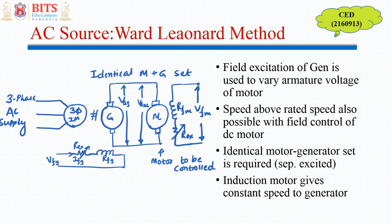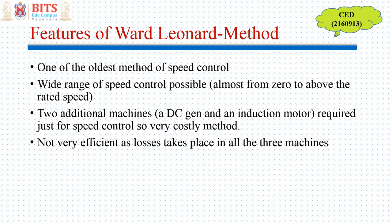This method requires an identical motor-generator set that is separately excited, and the induction motor gives constant speed to the generator. This is one of the oldest methods of speed control — it was used where speed control was invariably required and cost was not an issue. A wide range of speed control is possible, from minimum to above rated speed — that is the beauty of this method.